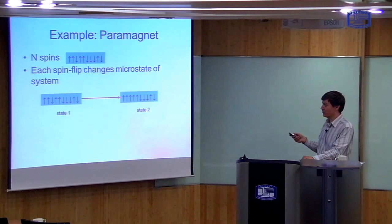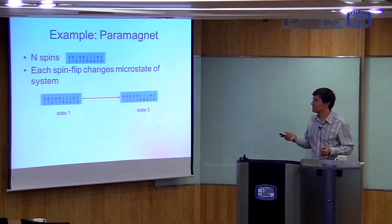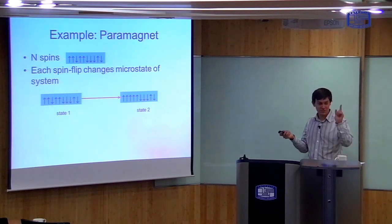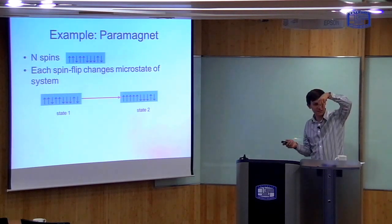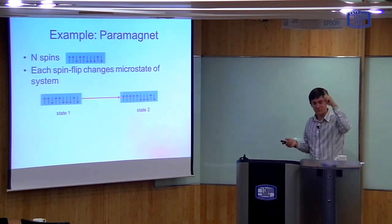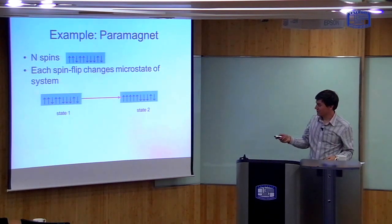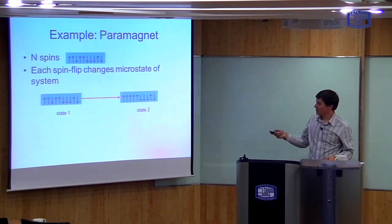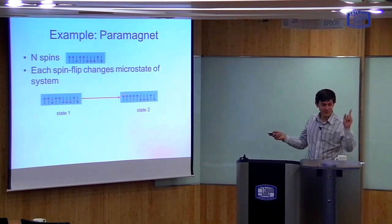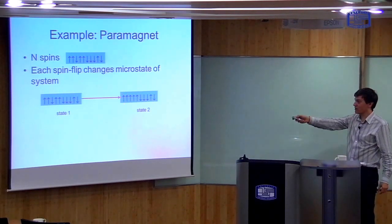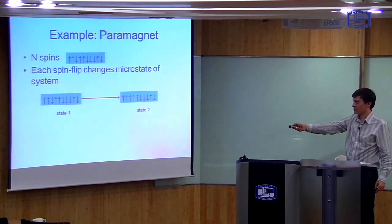And how does the system evolve? Just like the gas can have collisions, I imagine that in this system there can be spin-flip events. So at some point in time, one of the spins can suddenly change direction. If it was pointing up, the spin direction can turn to down. So I started out in microstate one where this arrow is down, and I went to microstate two where this arrow went up. In this way, again, you get a network of different microstates and different ways of going between them.